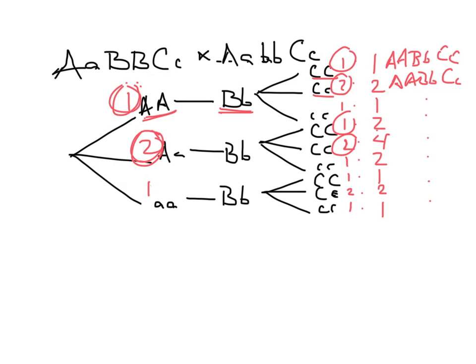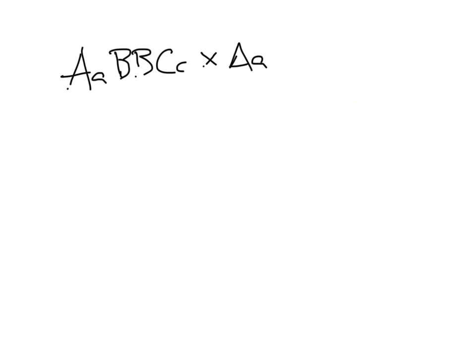Now I'm going to recalculate this just using phenotypes. Starting again — my genotypes were big A little a, big B big B, and heterozygous big C little c, crossed to heterozygous for A, homozygous recessive for B, and big C little c. That's my cross. Now if I'm looking only at the phenotype, let's start with A.